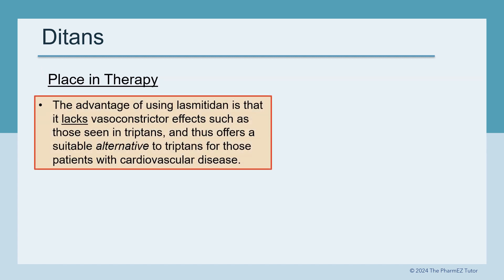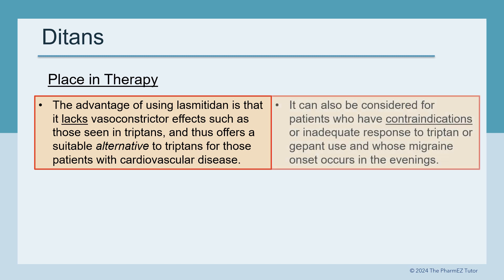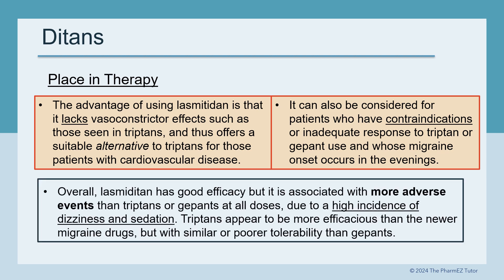Place in therapy: the advantage of using Lasmiditan is that it lacks vasoconstrictor effects seen in triptans, and thus offers a suitable alternative for patients with cardiovascular disease. It can also be considered for patients with contraindications or inadequate response to triptans or G-PANs, and whose migraine onset occurs in the evenings. Overall, Lasmiditan has good efficacy but is associated with more adverse events than triptans or G-PANs at all doses, due to a high incidence of dizziness and sedation. Triptans appear to be more efficacious than the newer migraine drugs but with similar or poorer tolerability than G-PANs.